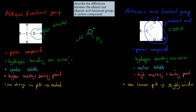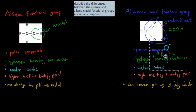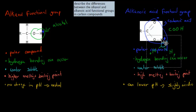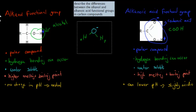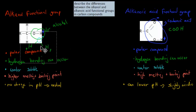Both the alkanol and alkanolic acid functional groups can form hydrogen bonds with water. The water molecule's negative oxygen can bond to a positive hydrogen, and the positive hydrogen can bond to a negative oxygen — making hydrogen bonds in both directions. Because both can form these hydrogen bonds, they are also both water-soluble, meaning they dissolve in water.